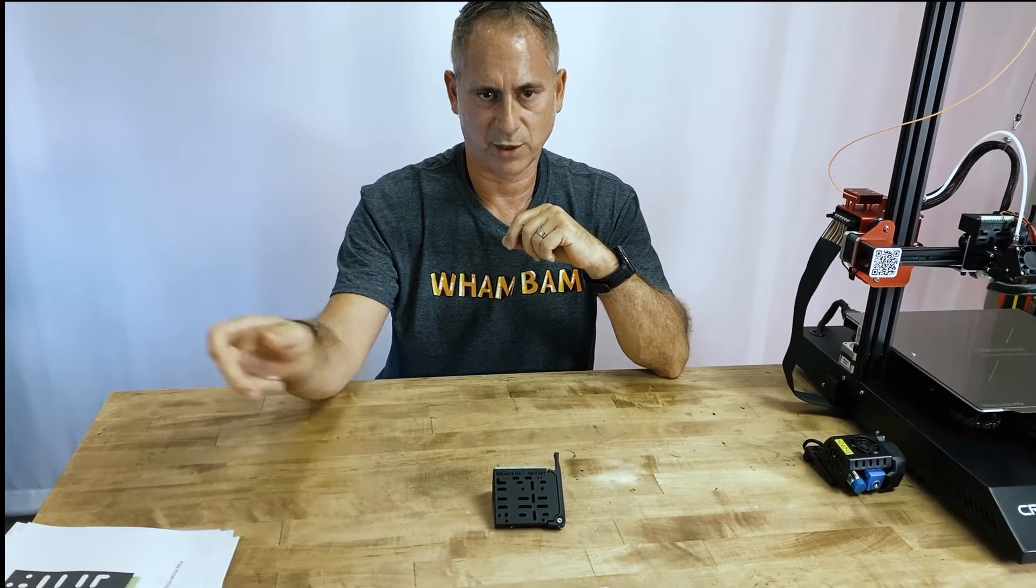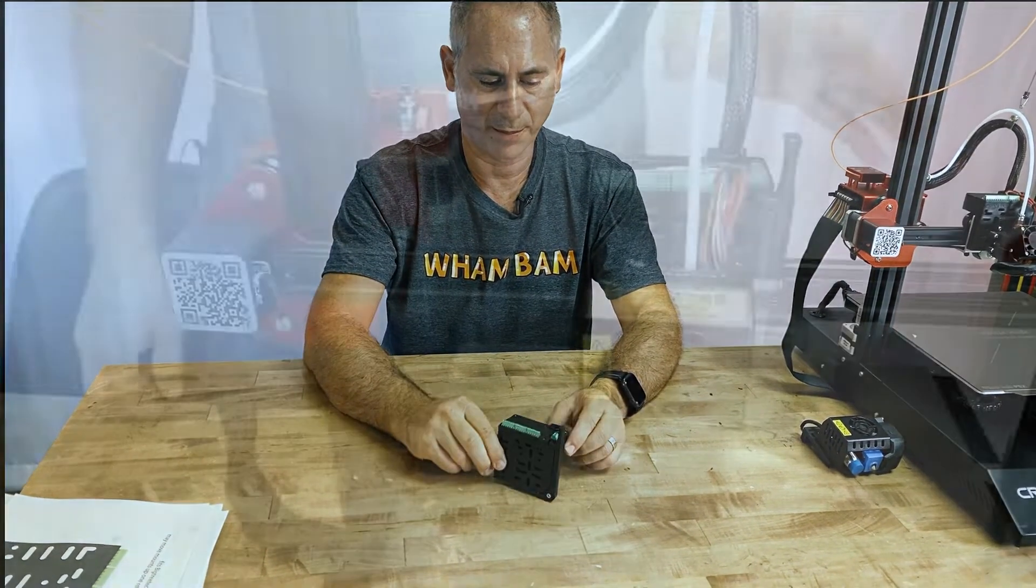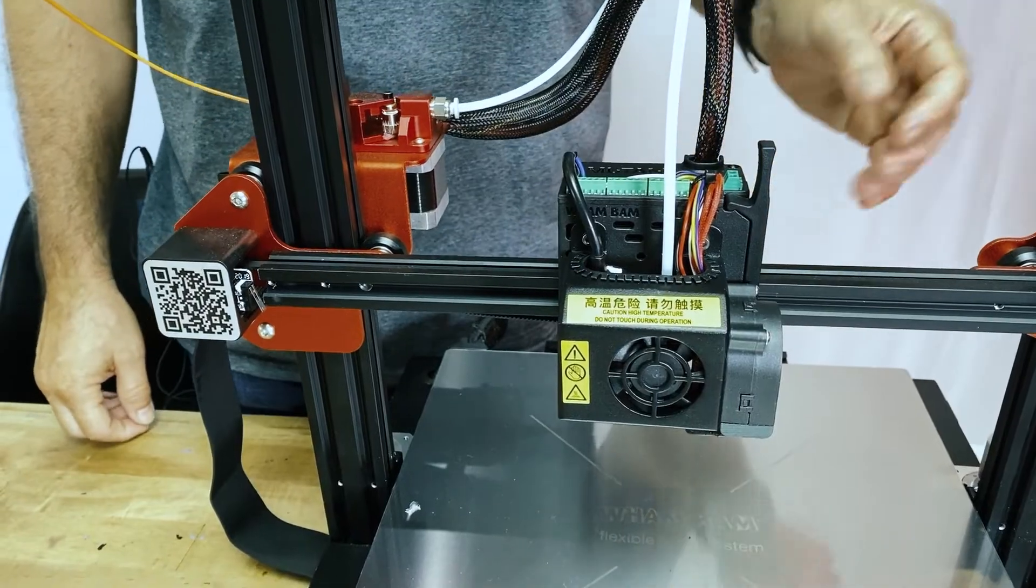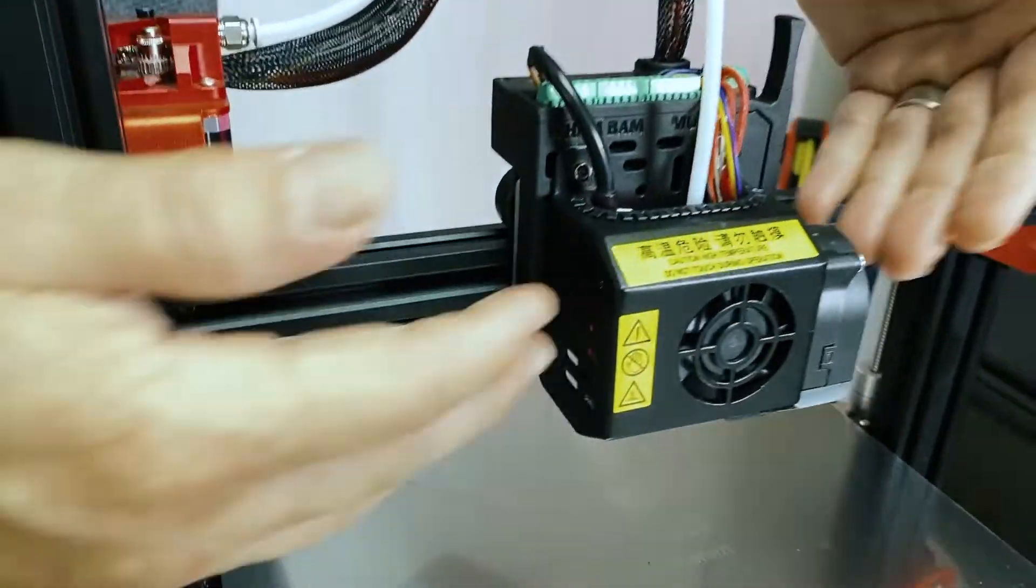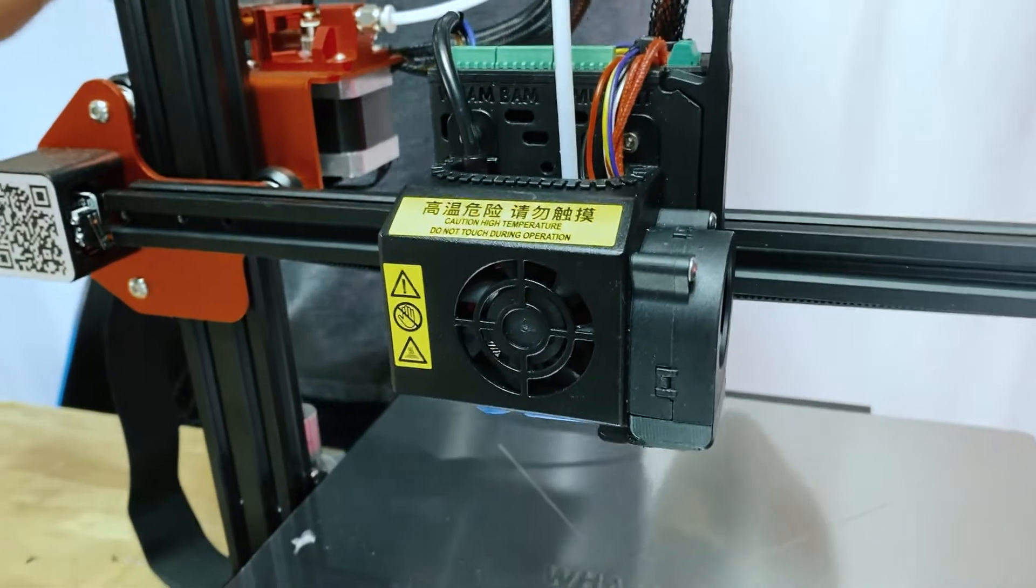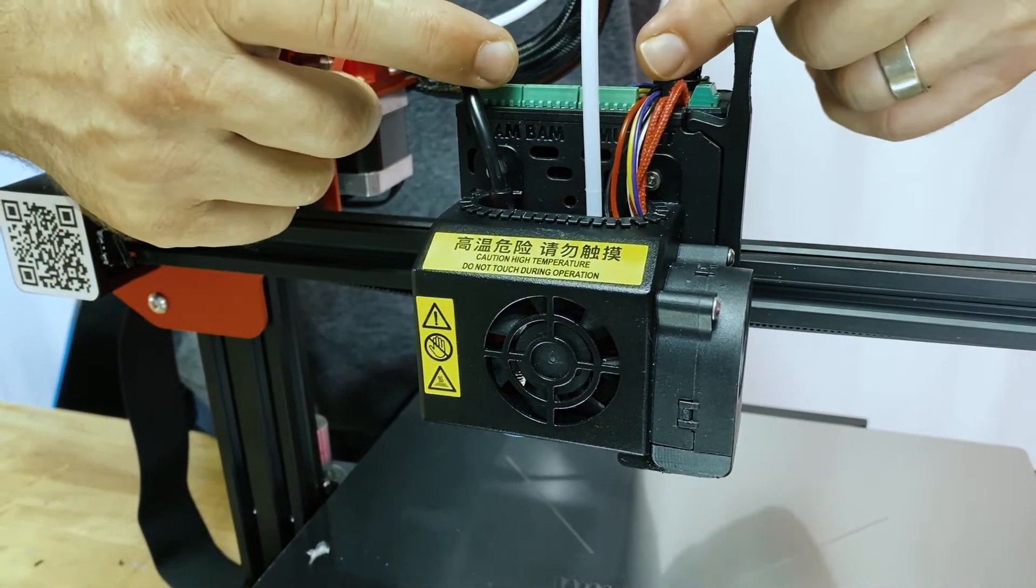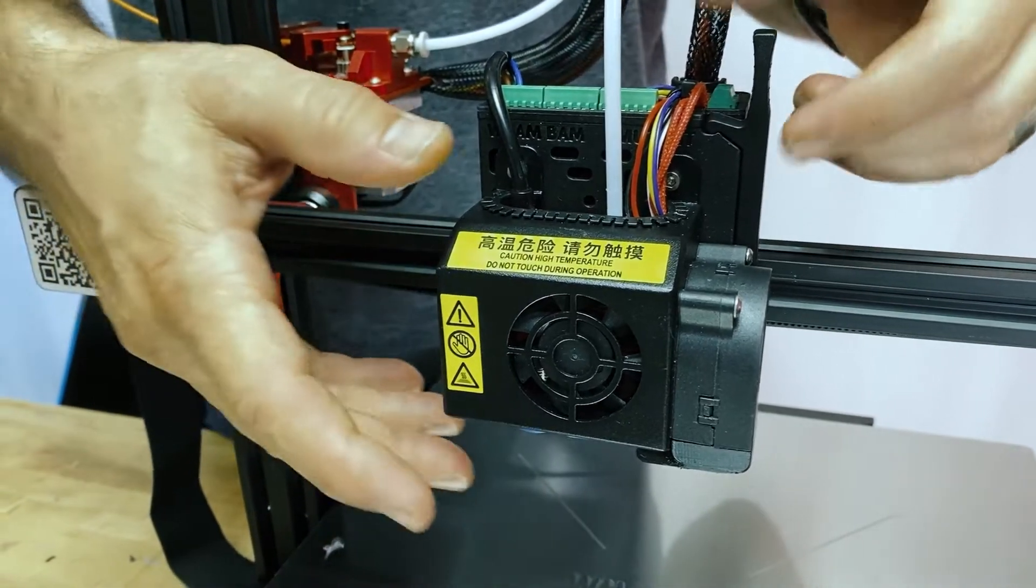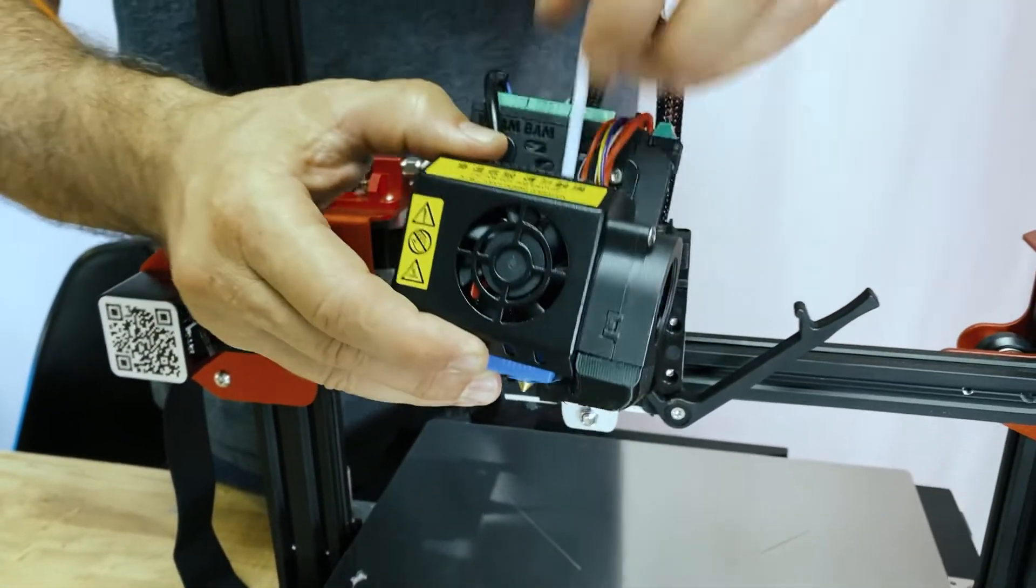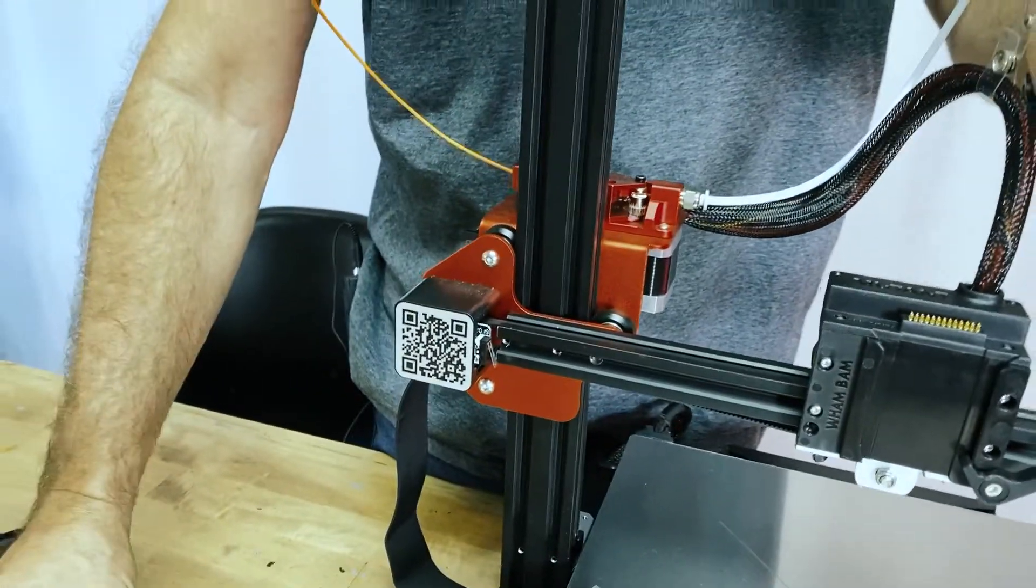As you can see, the Mutant will accept the native hot end from the Creality CR10X Pro and it wires up neatly to the mobile plate. It's ready to be removed at any time with our all-metal coupler. The Bowden tube releases very nicely and you are ready to put on any configuration of hot end or tool head that you like.